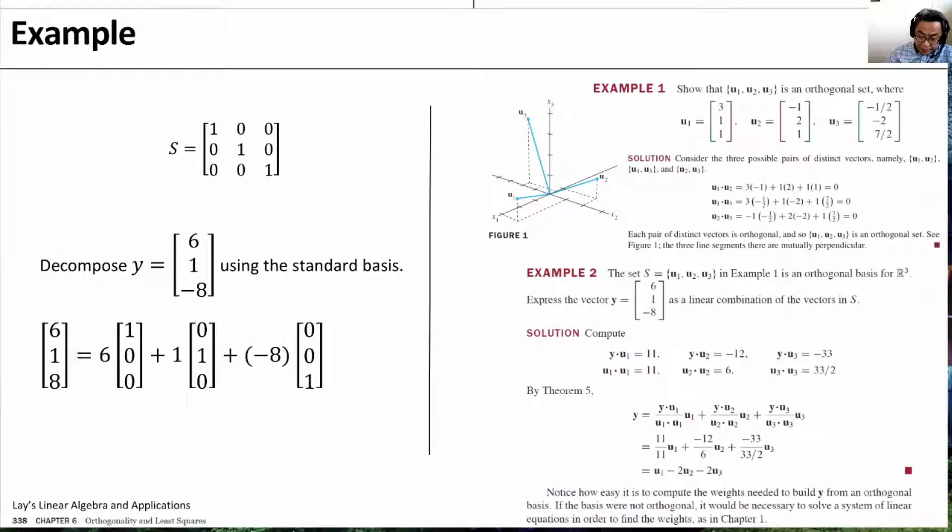Let us now have an example. Let us have a matrix called S, where S have three columns, U1, U2, and U3. Now, these three vectors spans the space of W.